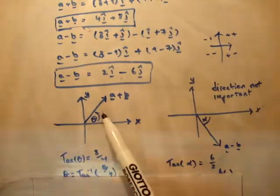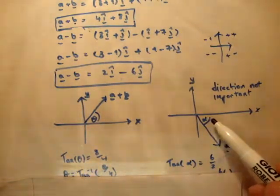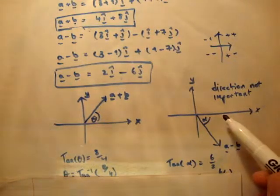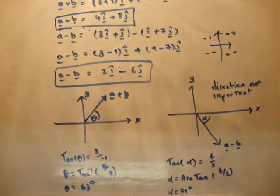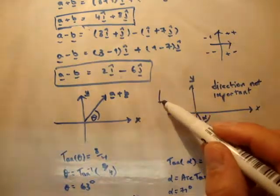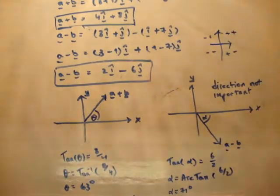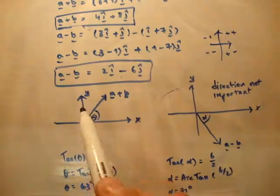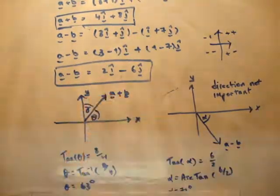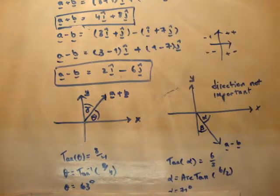I'm going to define the angle theta between vector a plus b and the x-axis, and the angle alpha between vector a minus b and the x-axis. We're asked to find whether there's an angle of 90 degrees between them. The first thing we need to do is find out at what angle these vectors are to the axis. We need to find some way of determining the angles these vectors make.